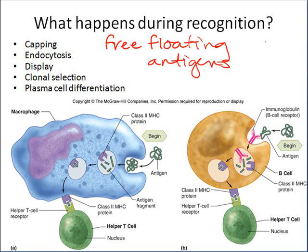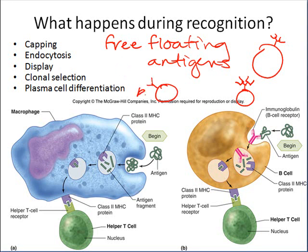B cells, to become immunocompetent, each begin to manufacture a uniquely shaped antibody on their surface, and no two B cells have the same shaped antibody. They have what are called B cell receptors, or BCRs, on their surface — just like T cells had uniquely shaped T cell receptors — and each one responds to only one shaped type of antigen.